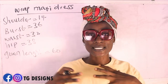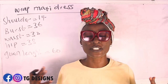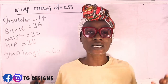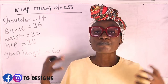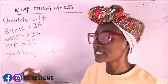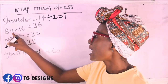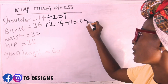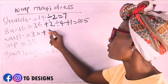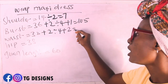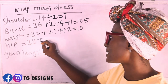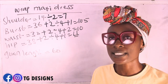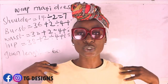What are the basic measurements required to achieve your wrap maxi dress? You need your shoulder, bust, waist, hip, and gown length. Let's calculate: shoulder is 14, divided by 2 equals 7 inches. Bust is 36, plus 2 divided by 4 plus 1 equals 10.5 inches. Waist is 32, plus 2 divided by 4 plus 2 equals 11 inches. Gown length is 60 inches from shoulder to hem.